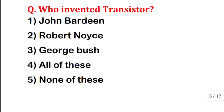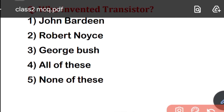Who invented transistors? Options are: George Bardeen, Robert Noyce, George Bush, All of them, or None of these. The correct answer is the first option — George Bardeen. You need to remember inventors well because exams can ask who the father or inventor is.